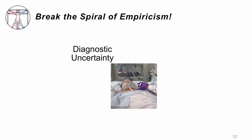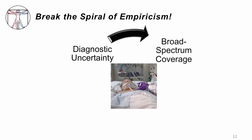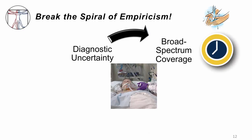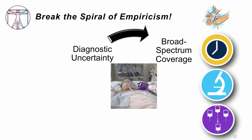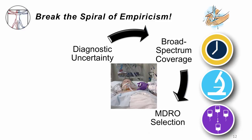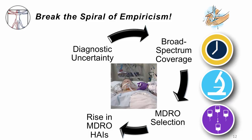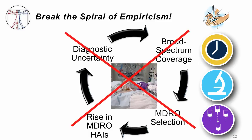We need you to break the spiral of empiricism. You come to work, your patient is super sick, you don't know what they have, and you cover them broadly — that's exactly the right thing to do. But if you follow the five tenets we're discussing, you'll be able to break that spiral. Get the tubes out as quickly as you can, get a diagnosis, and trust the data from the lab. If you do not, mark my words, you will select multiply drug-resistant organisms. Those organisms will spread from one patient to the next, and you'll find yourself covering every new patient more and more broadly. You have to break this spiral of empiricism.